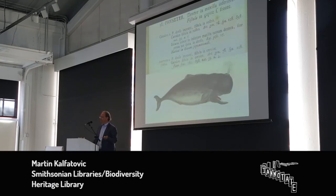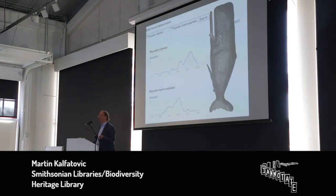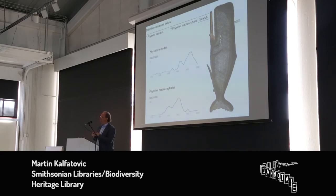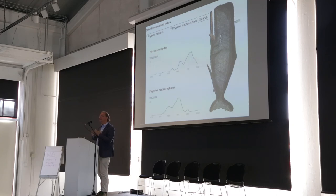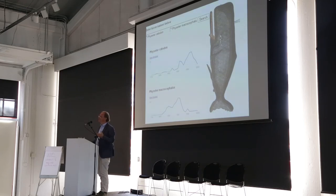Here we have an example: the sperm whale, sometimes known as Physeter macrocephalus and sometimes as Physeter catodon. One of the problems with biodiversity literature is that species names change over time as new taxonomic concepts emerge. With DNA sampling we can lump species together — what we thought were two species might be one, where one was a juvenile and one an adult. We also now see that sometimes they're actually two species, so we split those taxon concepts. Historically, all of those concepts are embedded in this printed and now digitized literature, and we need to link and annotate those different taxonomic concepts together in both automated and human-based ways.